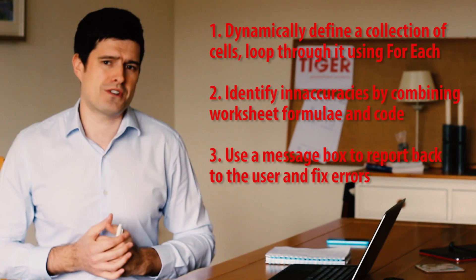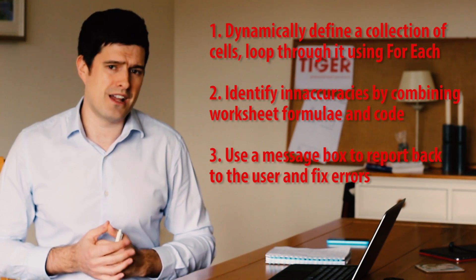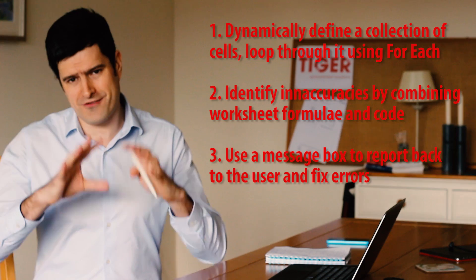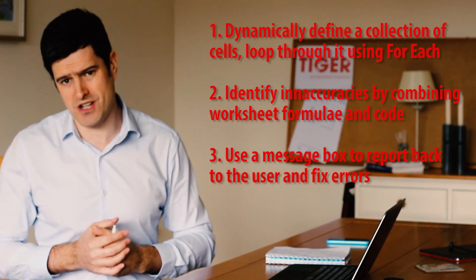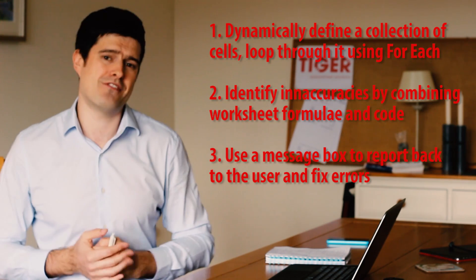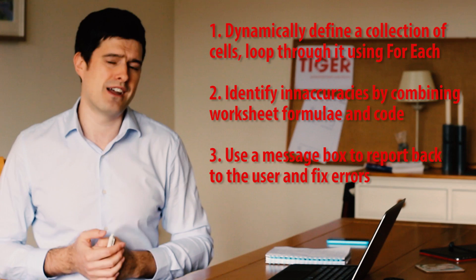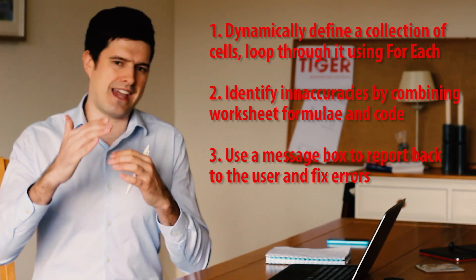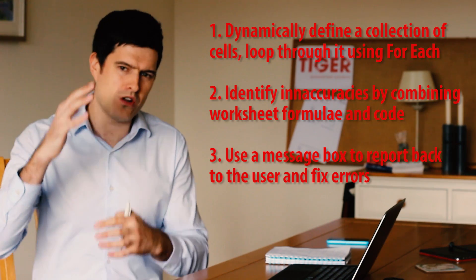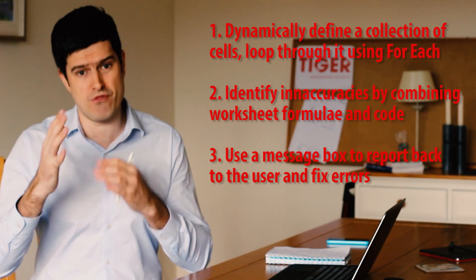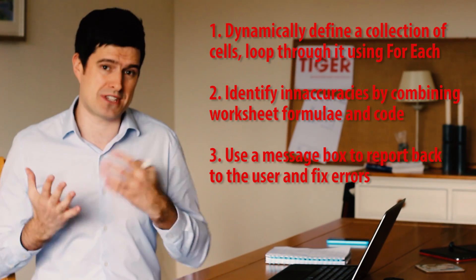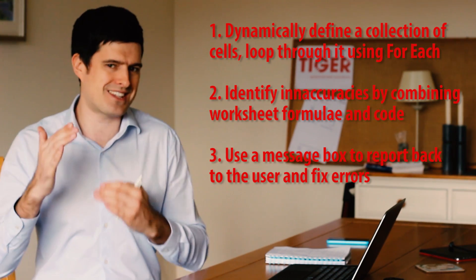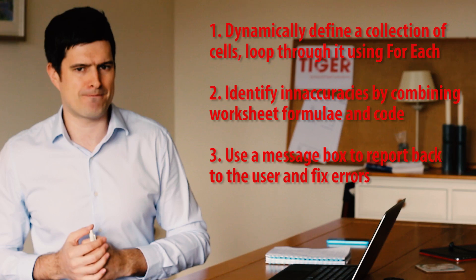There are three steps in the approach we're going to look at. First, we're going to define a range of cells to look at. We're going to dynamically define that range, which means that if our data set gets smaller or larger — if some rows are added or taken away — our coding will be able to handle that and still look at the whole data set.